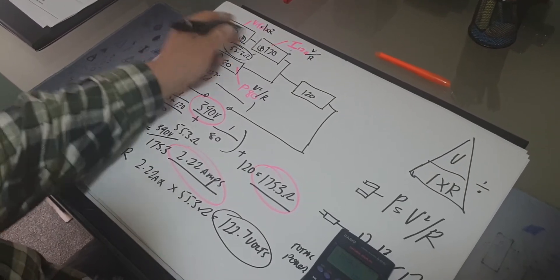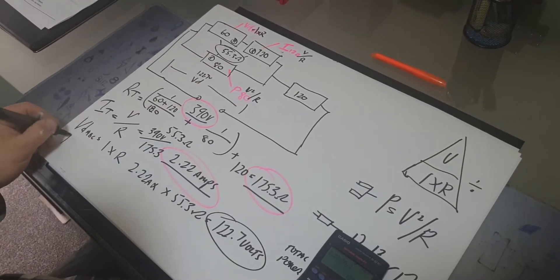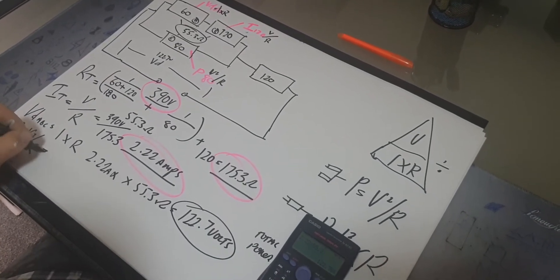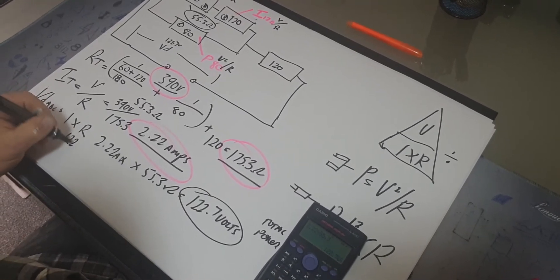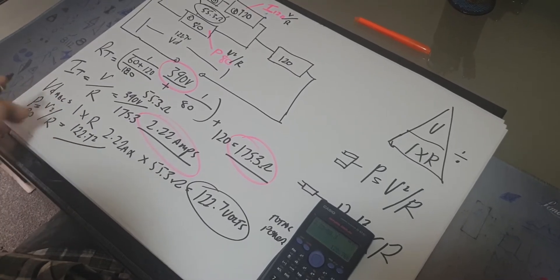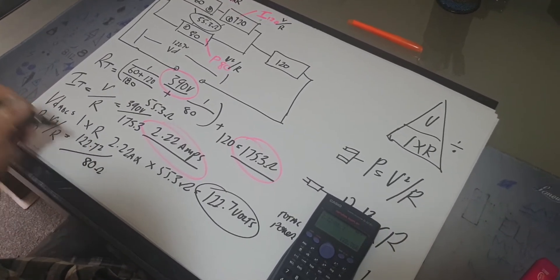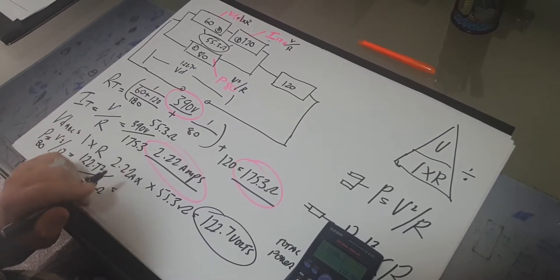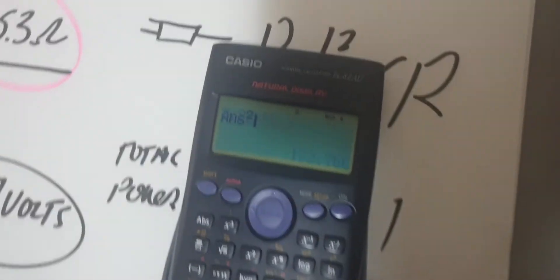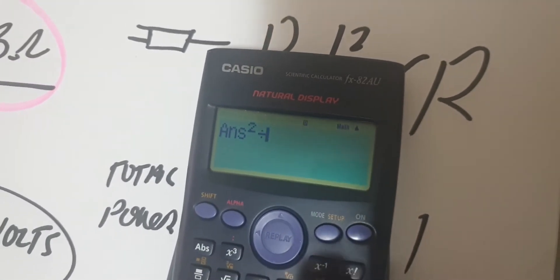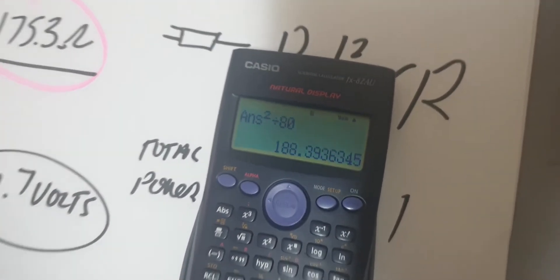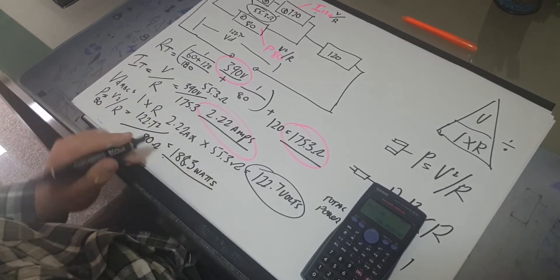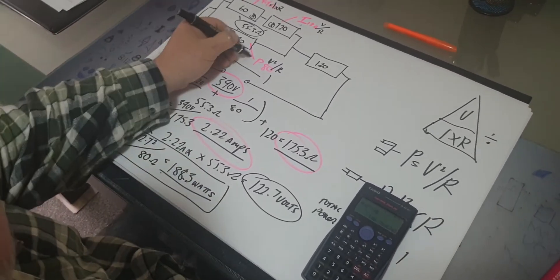So we've got the voltage drop for the whole three of these, 122.7 volts is across these three here. So P equals V² over R for the 80 ohm resistor. V² is 122.7 volts squared divided by 80 ohms. 122.7 squared divided by 80 ohms, and we get 188.3 watts.